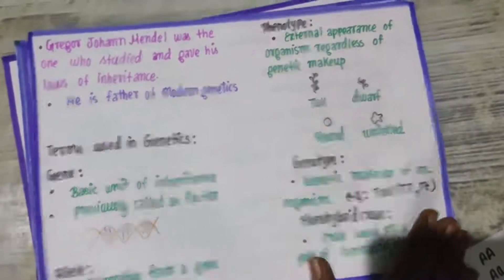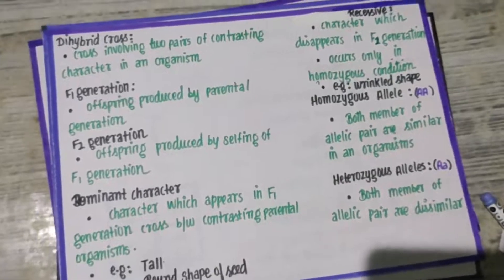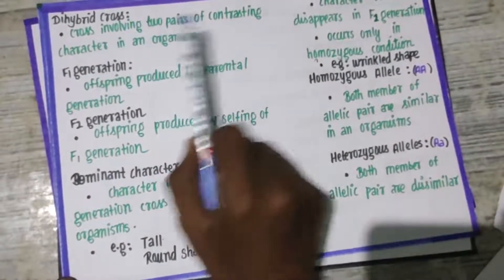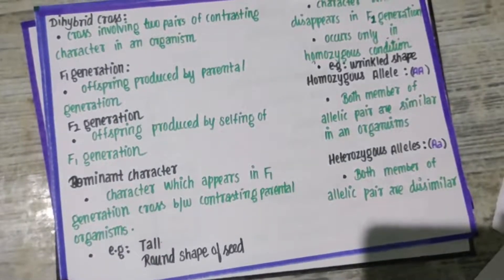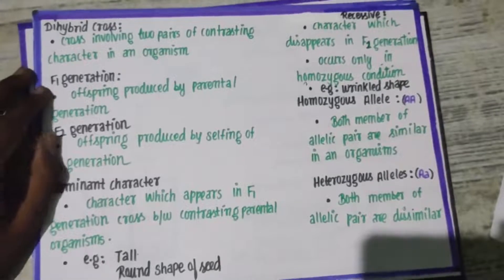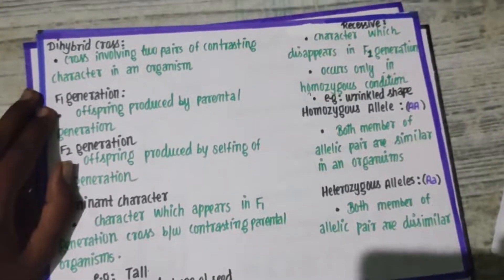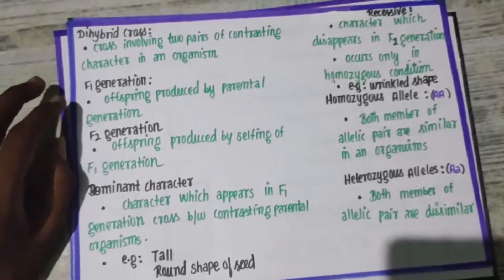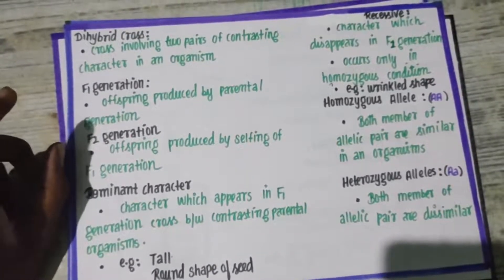Coming to dihybrid cross: a dihybrid cross involves two pairs of contrasting characters in an organism. For example, in Mendel's experiment, we take round yellow seeds and wrinkled green seeds. Here we have two characters — the shape of the seeds and the color of the seeds — two contrasting traits. That is what we call a dihybrid cross.